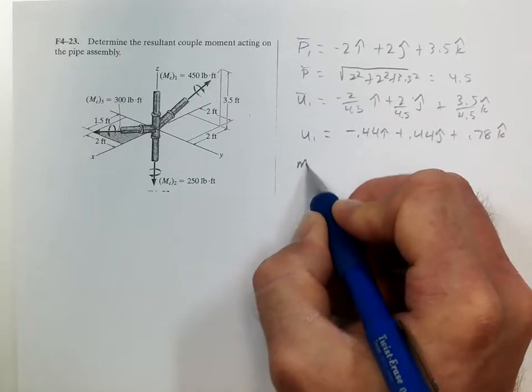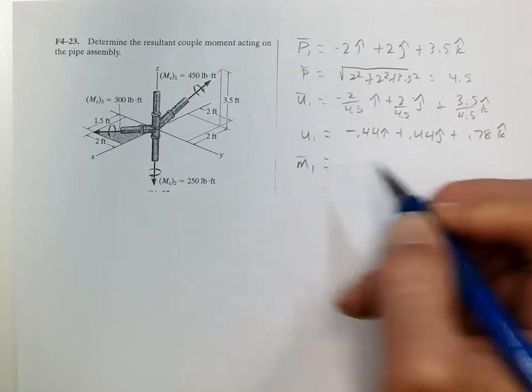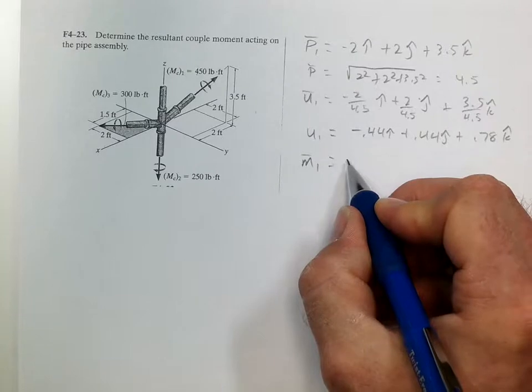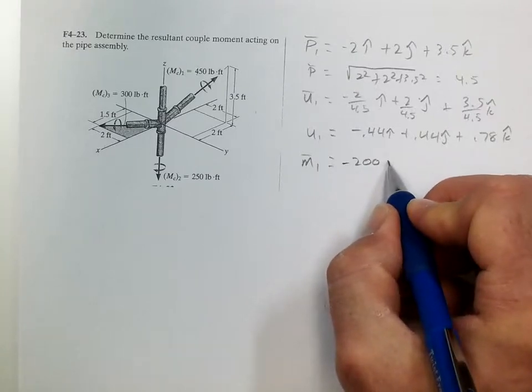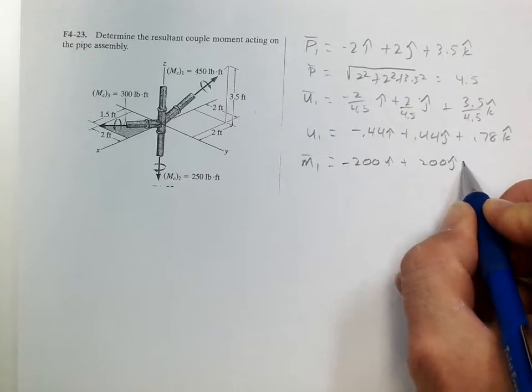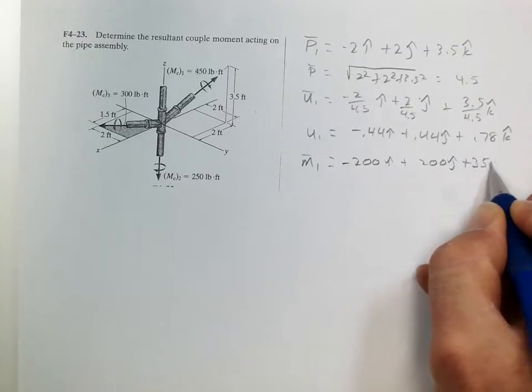So the moment is equal to the magnitude 450 times the unit vector, which gives us negative 200 in the i plus 200 in the j plus 350 in the k.